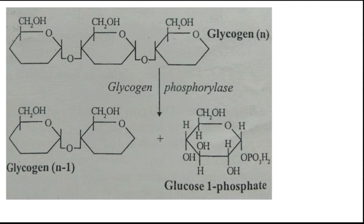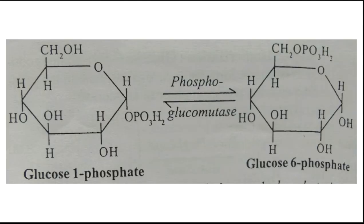In the second step, glucose-1-phosphate is reversibly converted to glucose-6-phosphate by the action of the enzyme phosphoglucomutase. This is a reversible reaction, and it forms glucose-6-phosphate — that is the second step of glycogenolysis.